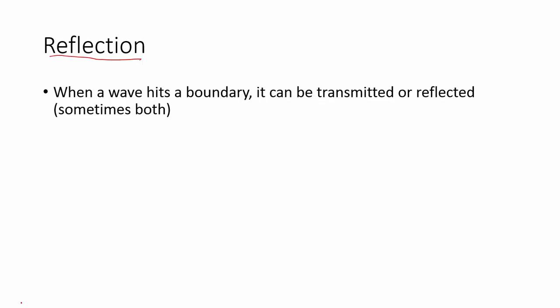The first thing to look at is reflection, which you looked at in lab. Reflection occurs when a wave hits a boundary — a surface between two media. When a wave hits a boundary, a couple things can happen: it can be transmitted, moving through into the next media, or it can be reflected, coming back, or it can be both. You've seen both if you've looked into a clear piece of glass and seen the stuff on the other side while also seeing your own reflection.